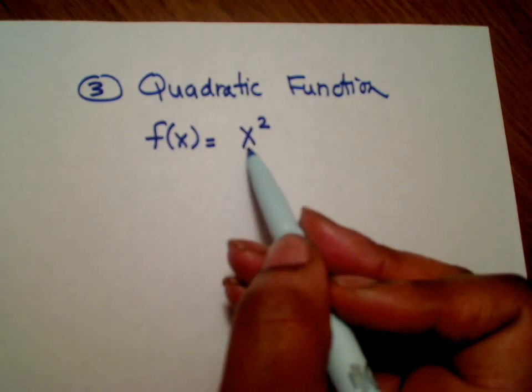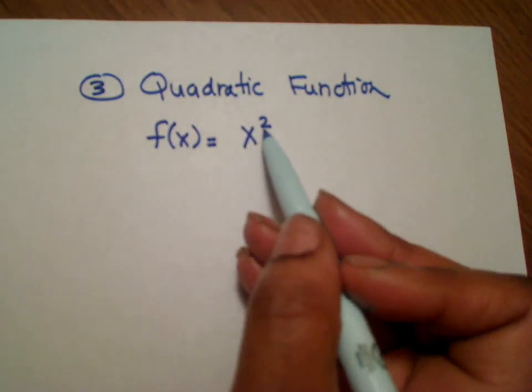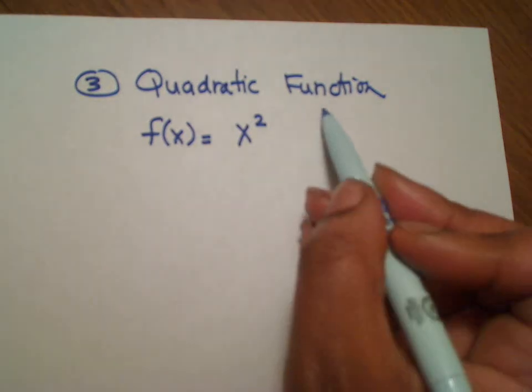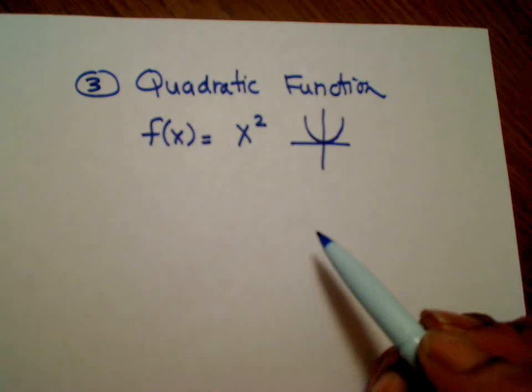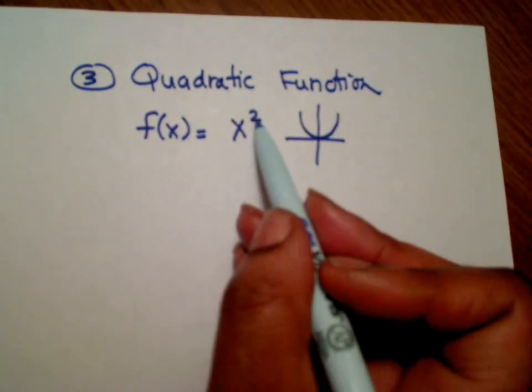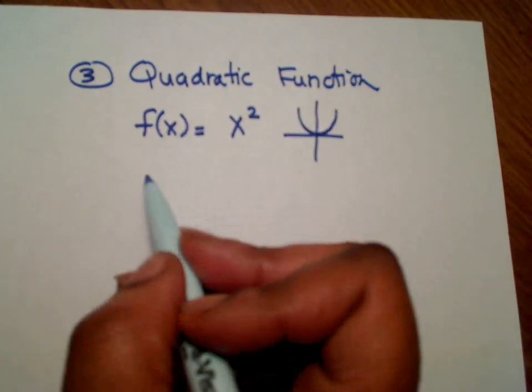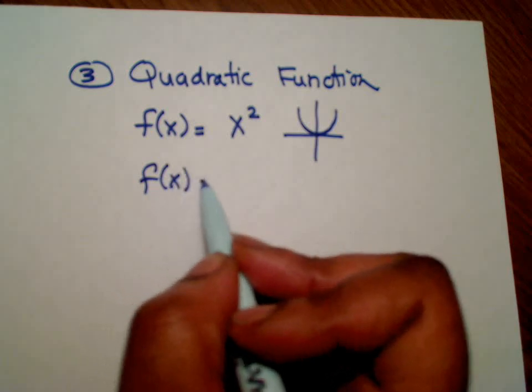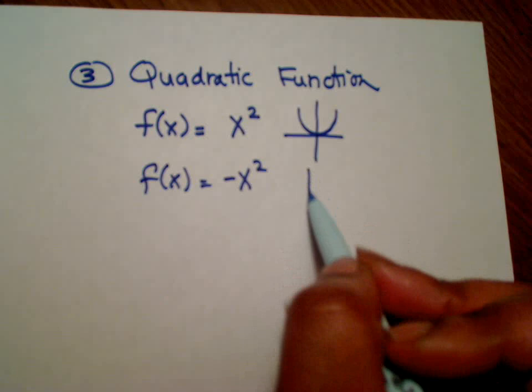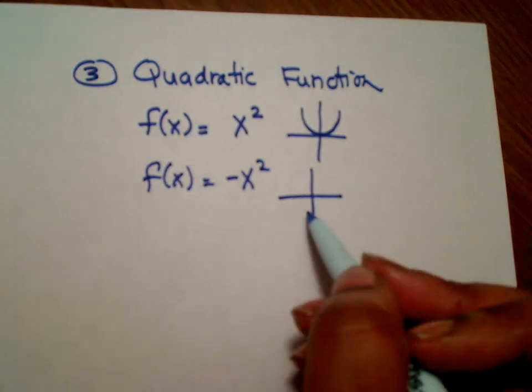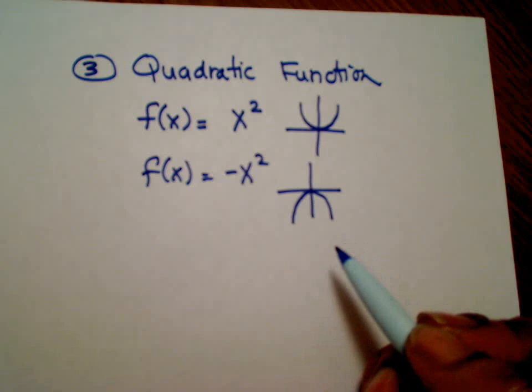Notice here, whenever you have something to the second power, you're going to actually end up with a parabola. Which basically means it's a U shape. So if I have something to the second power, I know it's a U shape. If I have an x squared to the second power but a negative, what is it going to do? Basically the same thing with the V, it just flips downward.